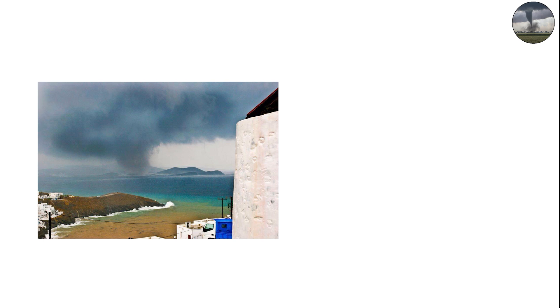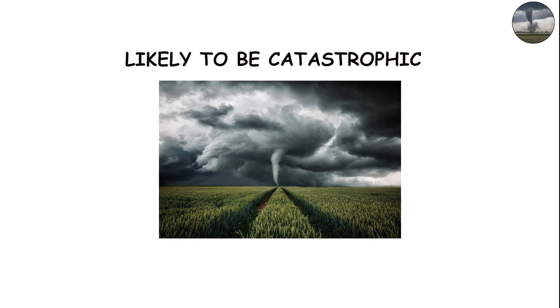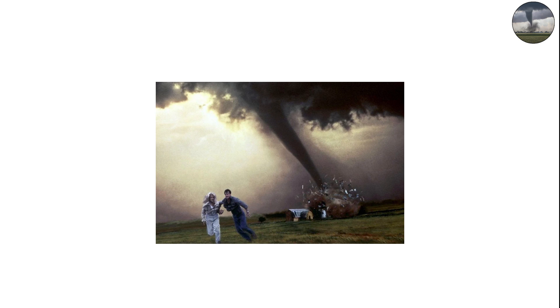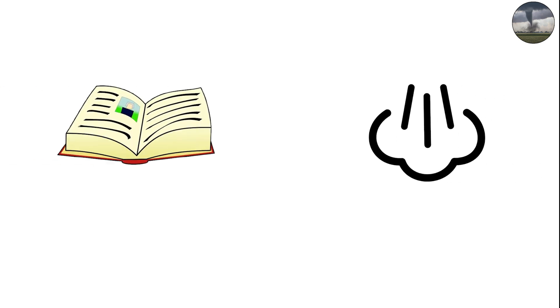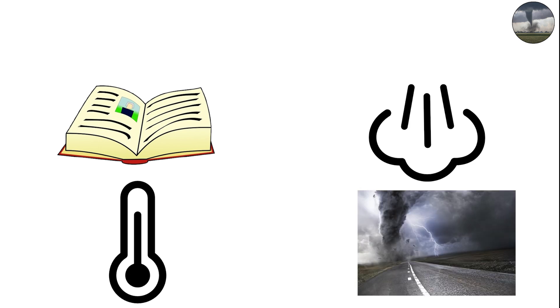However, large, well-organized wedge tornadoes often signal high energy and strong rotation, meaning they're more likely to be catastrophic. So next time you see tornado footage, remember: the shape is like a fingerprint of the storm's internal dynamics. It tells a story about how air, temperature, and pressure interacted to create one of nature's most powerful forces.